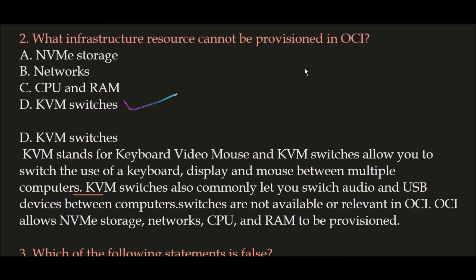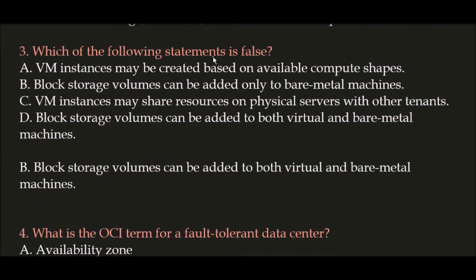OCI allows NVMe storage, networks, CPU and RAM to be provisioned, but not KVM switches. Question 3: Which of the following statements is false? Option A: BM instances may be created based on available compute shapes. Option B: Block storage volumes can be added only to bare metal machines. Option C: BM instances may share resources on physical servers with other tenants. Option D: Block storage volumes can be added to both virtual and bare metal machines. The false statement is Option B, because block storage volumes can be added to both virtual and bare metal machines.